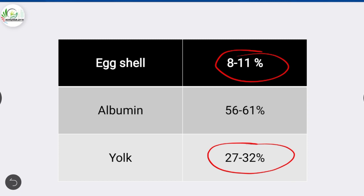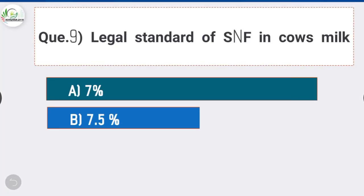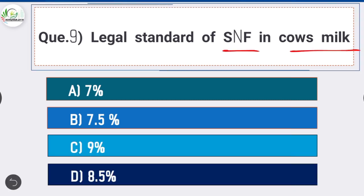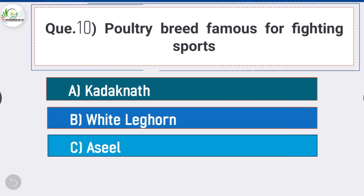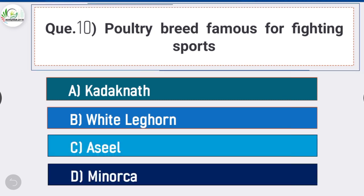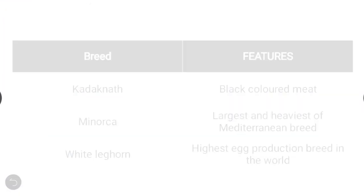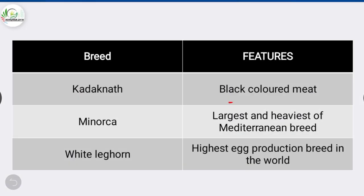Question number nine: the legal standard of SNF in cow's milk is what percentage? The answer is option D - 8.5 percent. The legal standard of SNF in cow's milk is 8.5 percent.